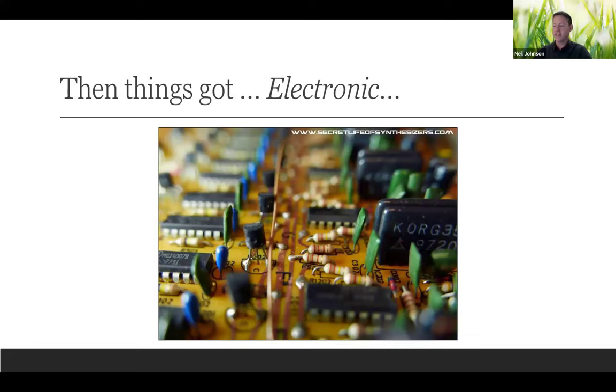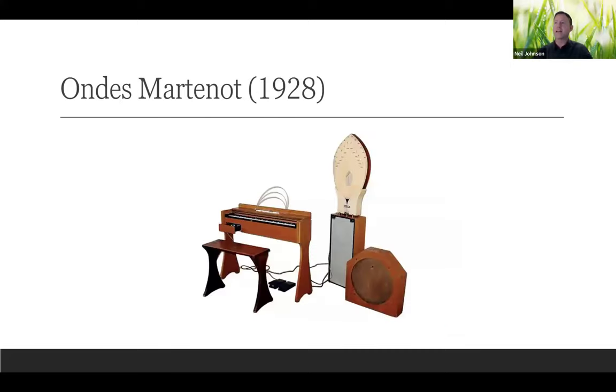Around the same time, there was lots of scrap aluminum after World War II, so Rhodes developed their own electromechanical instrument using aluminum tines. You hit them with a keyboard mechanism, amplify it, and you've got a home keyboard on the cheap. But things also got electronic.